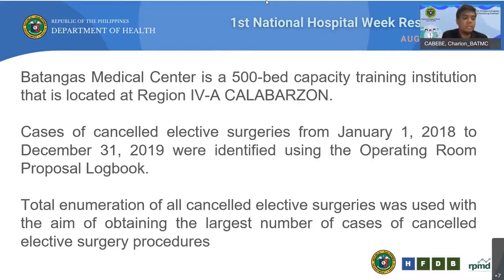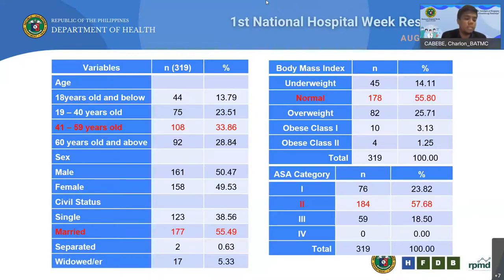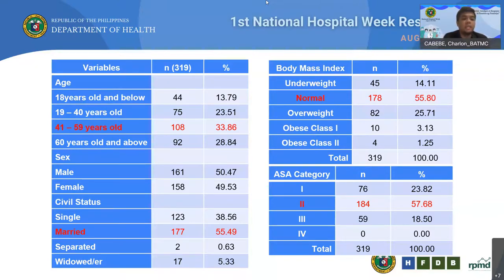Batangas Medical Center is a 500-bed capacity training institution located in Region 4A Calabarzon. Cases of canceled elective surgeries from January 1 to December 31, 2019 were identified using the operating room log book. Total enumeration of all canceled elective surgeries was used. On average, 17.2% of all admitted patients in the period between 2015 and 2019 at Batangas Medical Center had undergone surgery. During data collection, it was noted that some patients tagged as scheduled for elective cases were actually emergency cases. Upon rechecking, among the 374 patients originally tagged as canceled elective surgeries, 55 were actually emergency cases; hence there were only 319, or 4.97%, of actual elective surgeries canceled.